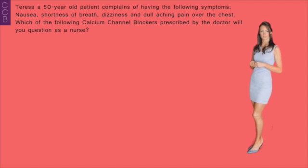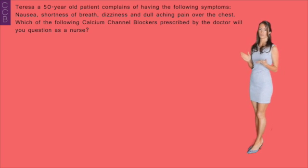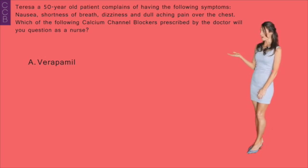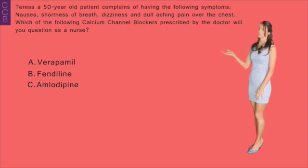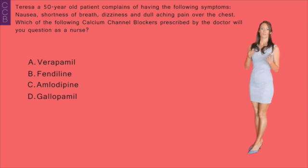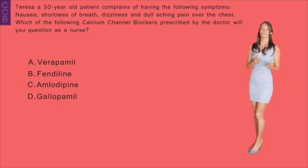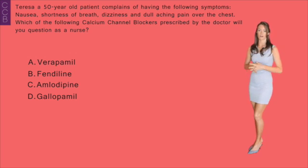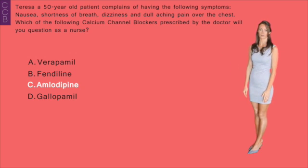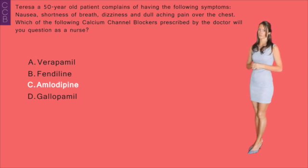Sudden withdrawal of calcium channel blockers may exacerbate angina. Now let's go over some NCLEX-style questions. Question 1: Teresa, a 50-year-old, complains of nausea, shortness of breath, dizziness, and a dull aching chest pain. Which of the following calcium channel blockers should the nurse question? A) Verapamil, B) Fendiline, C) Amlodipine, or D) Galopamil. Answer: Since the patient is experiencing angina, the drug class to avoid is dihydropyridines, which can cause reflex tachycardia and increased myocardial oxygen demand. Options A, B, and D belong to phenylalkylamines, which is a more desirable choice for angina.